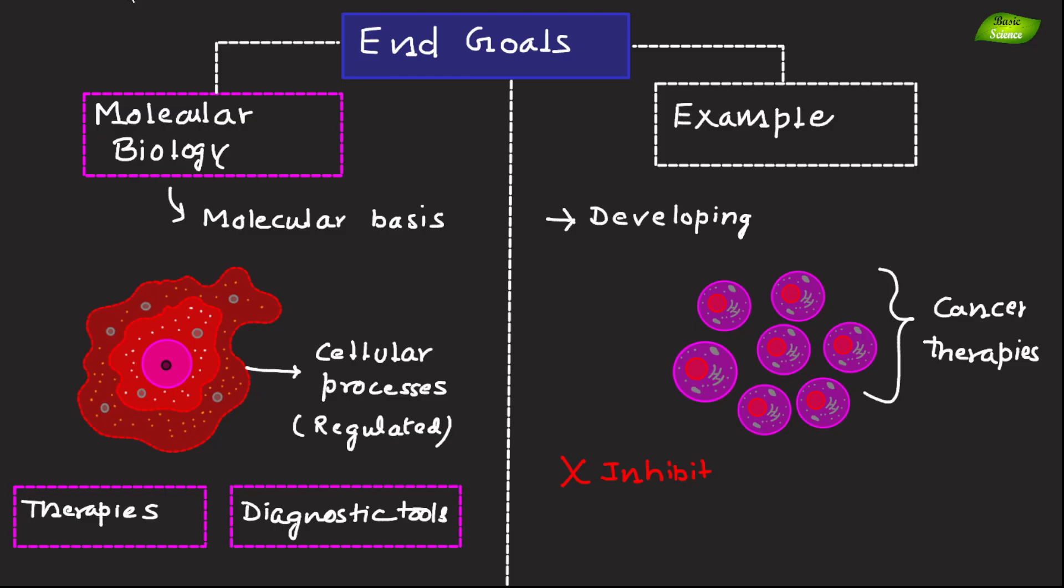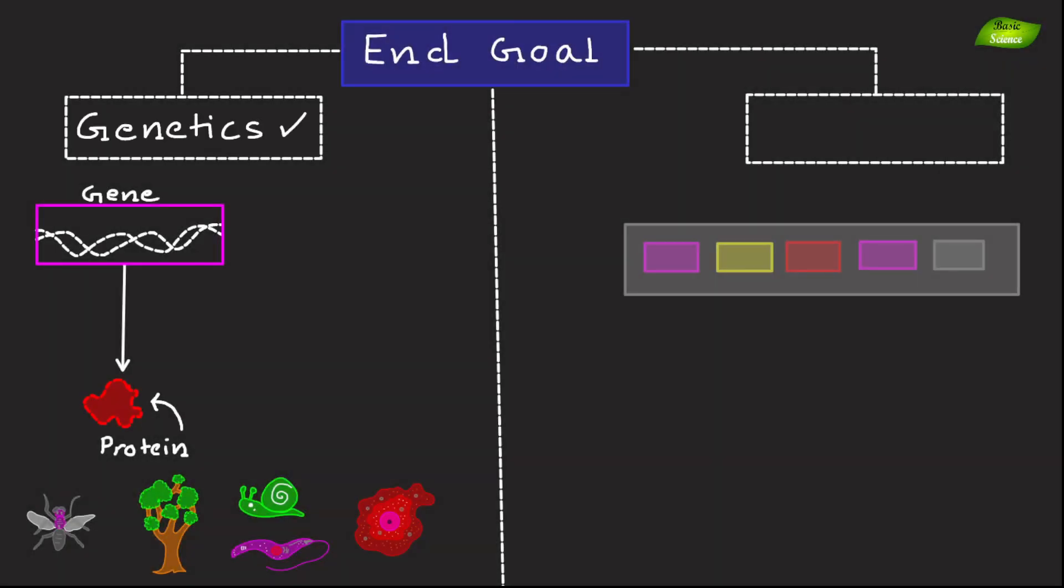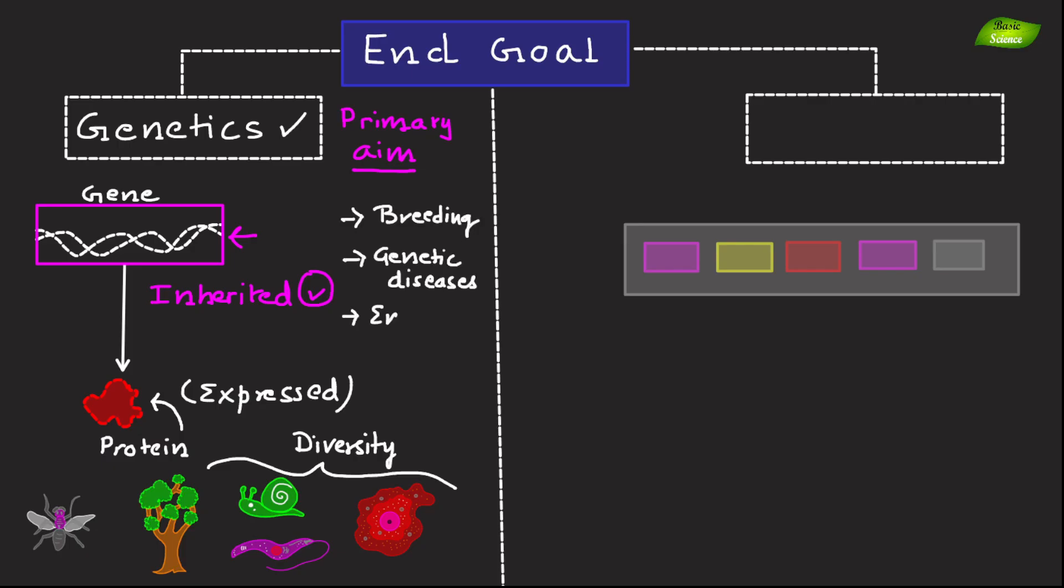The primary aim of genetics is to understand how genetic information is inherited and expressed, and how genetic variation contributes to the diversity of life. This knowledge can be applied to improve breeding programs, manage genetic diseases, and conserve endangered species. An example includes using genetic screening to identify carriers of hereditary diseases and provide counseling to affected families.